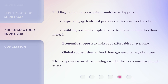Tackling food shortages requires a multifaceted approach. Improving agricultural practices to increase food production. Building resilient supply chains to ensure food reaches those in need. Economic support to make food affordable for everyone. Global cooperation, as food shortages are often a global issue. These steps are essential for creating a world where everyone has enough to eat.